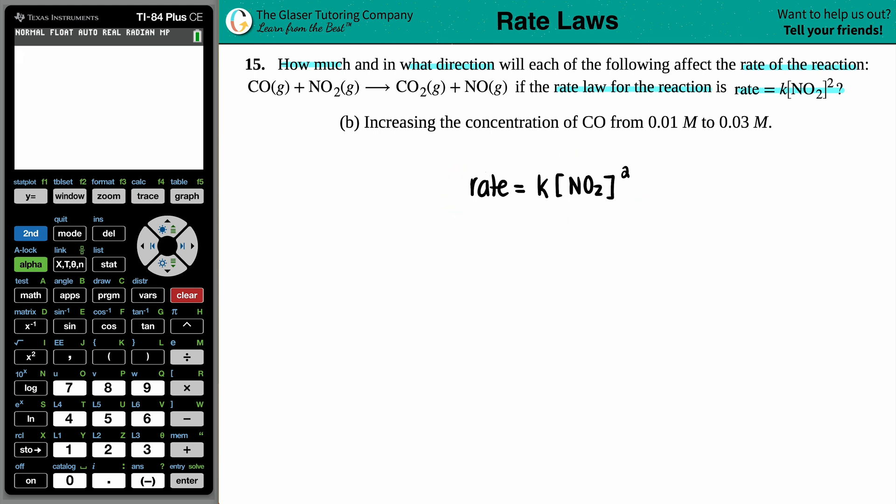Now, in this specific example, they're saying that we're increasing the concentration of carbon monoxide CO from 0.01 molarity to 0.03 molarity. What's going to happen to that rate if we increase the carbon monoxide concentration?